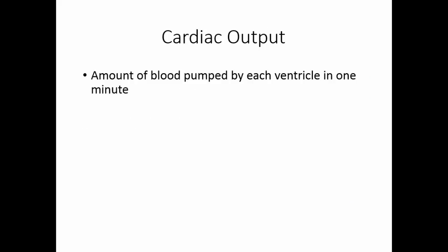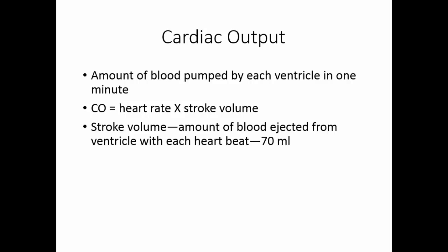Cardiac output is the amount of blood pumped by each ventricle in one minute. It can be determined if you know the heart rate and the stroke volume — the amount of blood ejected from the ventricle with each heartbeat. In a normal heart, stroke volume is about 70 milliliters. So 75 beats per minute times 70 milliliters gives a cardiac output of 5,250 milliliters per minute, or 5.25 liters — meaning you circulate your entire blood volume about once a minute.